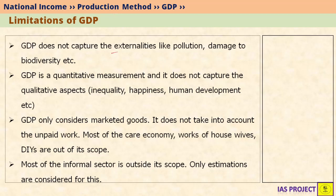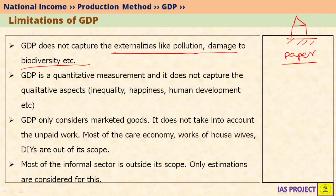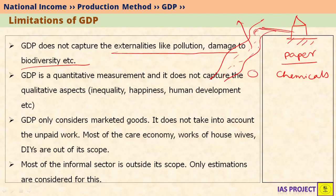GDP does not capture externalities like pollution and damage to biodiversity. For example, there is a factory manufacturing paper. This paper factory uses many chemicals and simply disposes of them in a nearby river. The river may be polluted, the fish may die, and the fishermen who depend on this river may lose or reduce their incomes and livelihoods. GDP does not capture all these externalities.